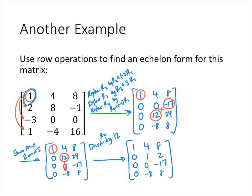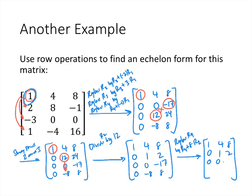Now we replace row 4 by row 4 plus 8 times row 2. Now that we have a 1 in the leading entry position of row 2, multiplying by 8 gives 8, which cancels the negative 8 in row 4. Row 1 stays as 1, 4, 8. Row 2 stays as 0, 1, 2. Row 3 stays as 0, 0, negative 17. Row 4's first entry stays 0, the second entry becomes 0, and 2 times 8 plus 8 = 16 plus 8 = 24.